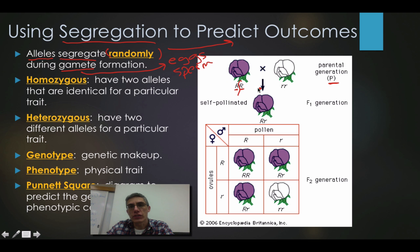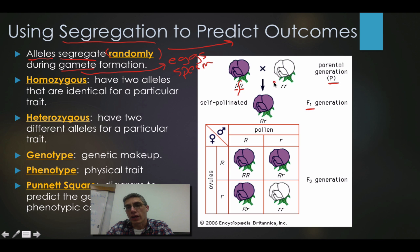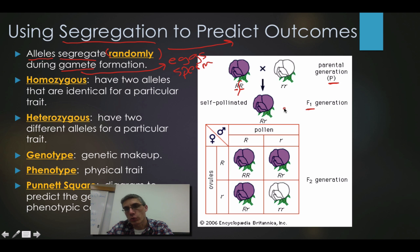Here we have two parents. If they self-pollinate, what's going to happen is we end up with the F1 generation only having one of the characteristics of the two traits we're looking at. In this case, we're looking at purple flowers and white flowers. The way we would code for those is two capital R's and two lowercase r's. The purple is going to be dominant over the white, but only the purple shows up because we have that dominant allele present, and as long as it's present, you're going to have that particular trait.